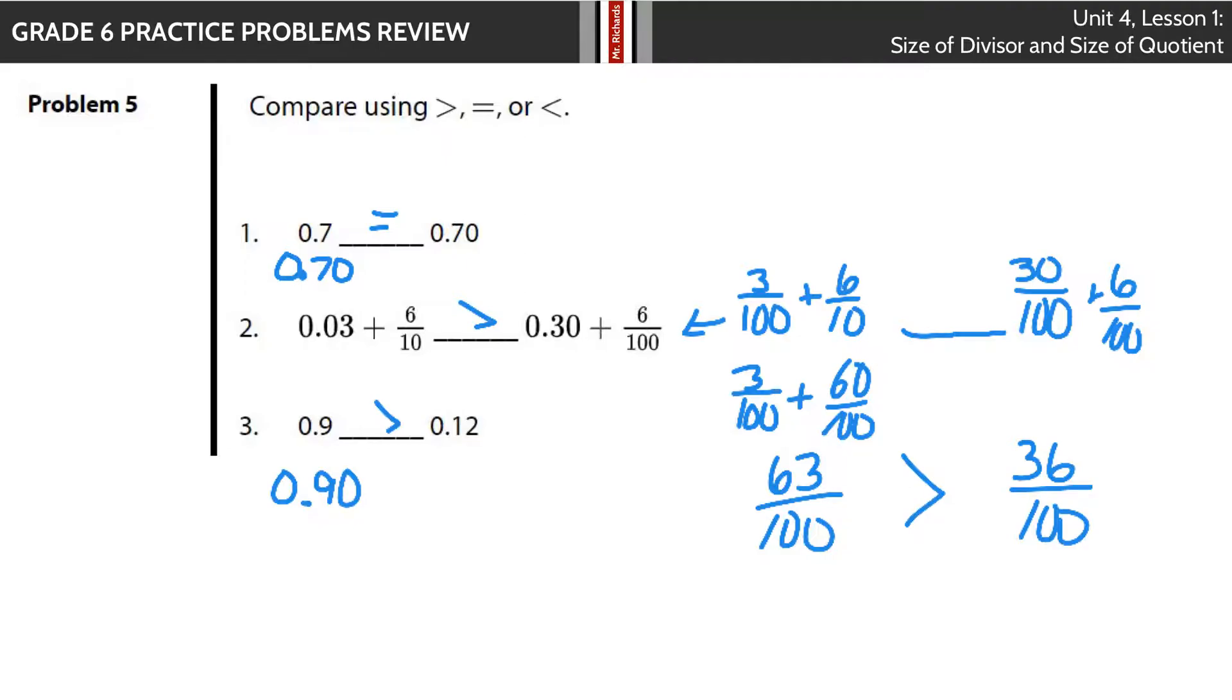If we skip down to 3, 0.9 is what 90 hundredths actually is, and it's greater than 0.12. It's very tempting to go 9 is smaller than 12, but this is 9 tenths. There's a 1 in the tenth spot here. So 9 tenths is always going to be bigger than 1 tenth and whatever else is over here.